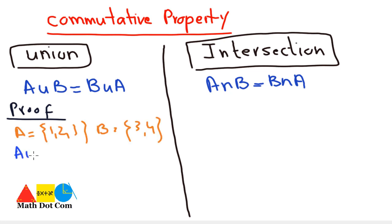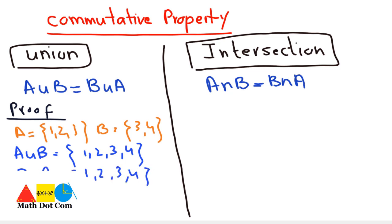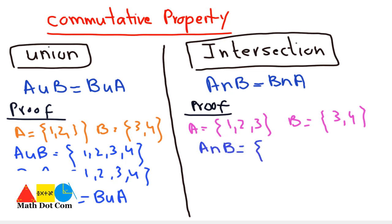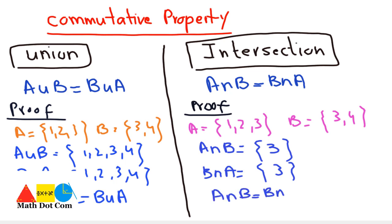For union: A union B gives all elements avoiding redundant ones — result is {1, 2, 3, 4}. And B union A also gives {1, 2, 3, 4}. So A union B equals B union A. For intersection: A intersection B has common element 3, and B intersection A also gives 3. So A intersection B equals B intersection A. Order doesn't matter according to the commutative property.